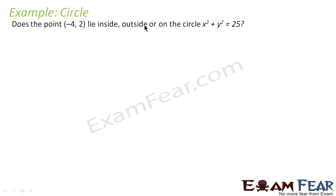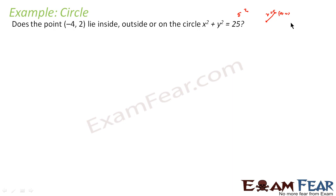We'll take one more example. We have to find whether (-4, 2) lies inside or outside the circle. We can find the distance of this point from (0, 0), because this circle has the origin as its center and r equals 5, since 5² = 25. If the distance is greater than 5, the point is outside the circle.